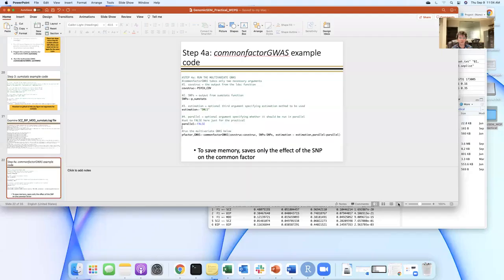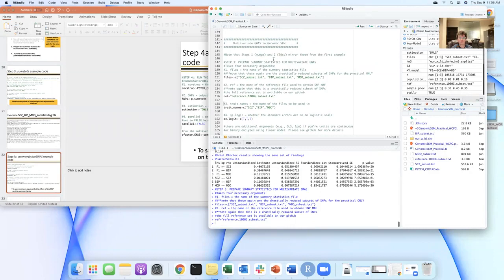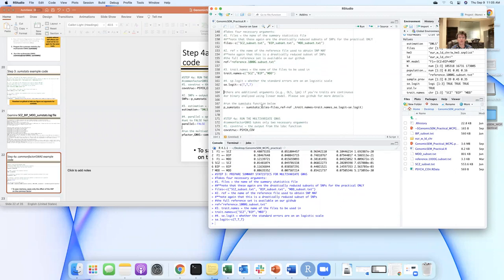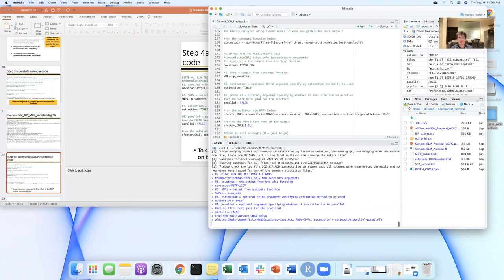I'm going to switch now over to R to go through that sum stats function, where again, we read in the files, the reference file, the trait names, whether the standard errors are on a logistic scale, we're writing T for true for all three, running sum stats, and now taking that output and specifying the LD score regression output, the output from sum stats that we created, and actually running the common factor GWAS function.